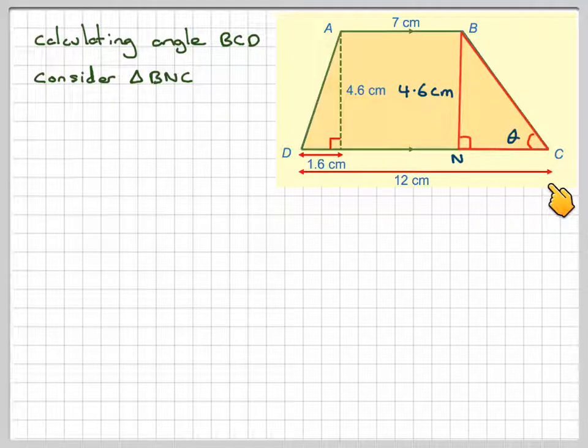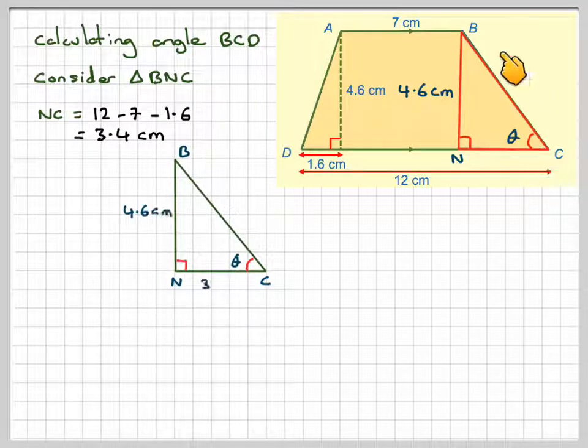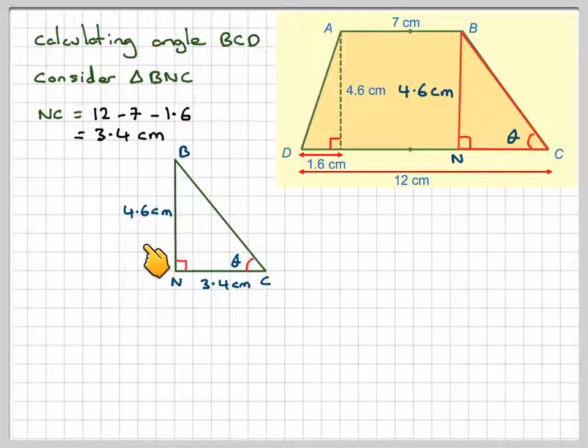So that should allow me to find the length NC. So NC will be 12, minus the 7, and minus the 1.6, which gives me 3.4 centimetres. Now drawing out that triangle. So this is 3.4 centimetres. This is 4.6 centimetres.